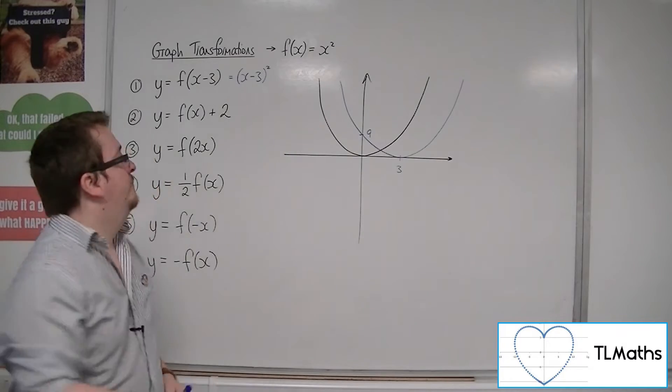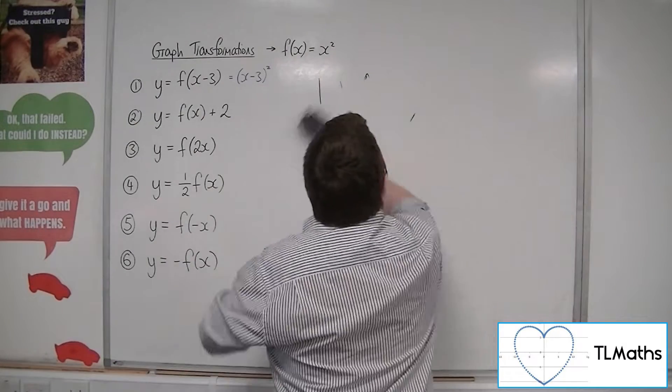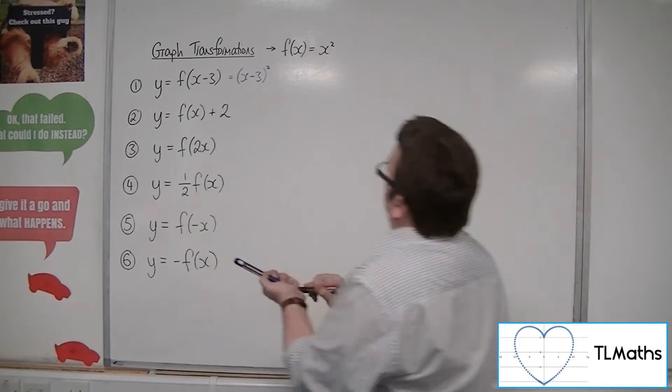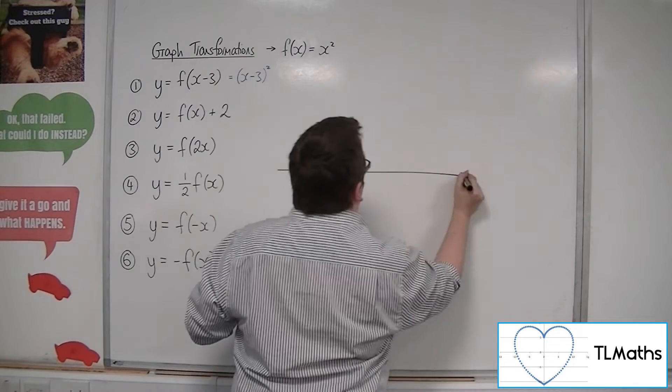So that's the first one. Now, if we have a look at number 2, we've got y equals f of x plus 2. So let's redraw the original curve.